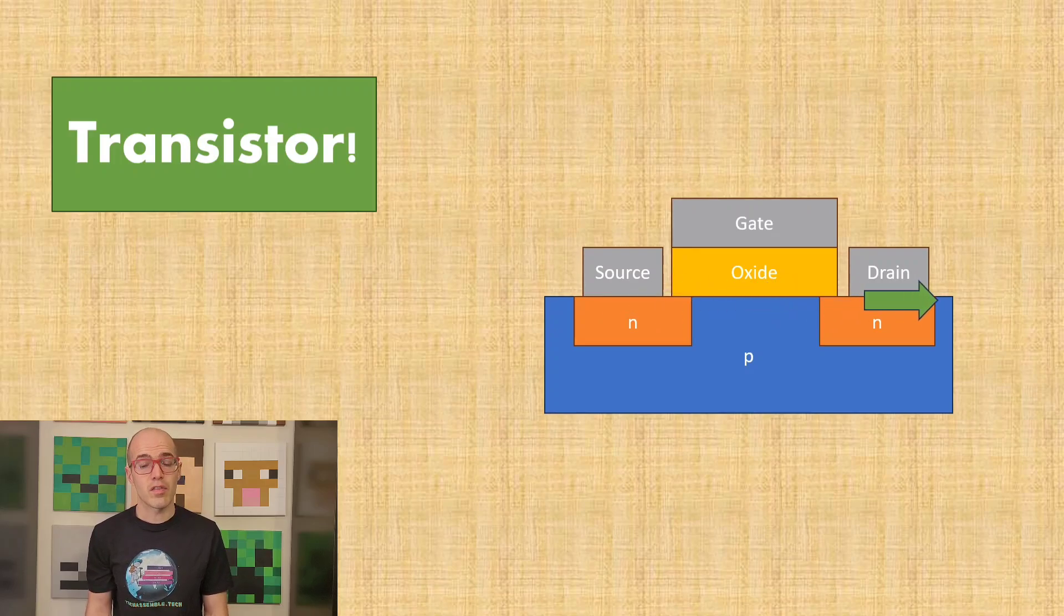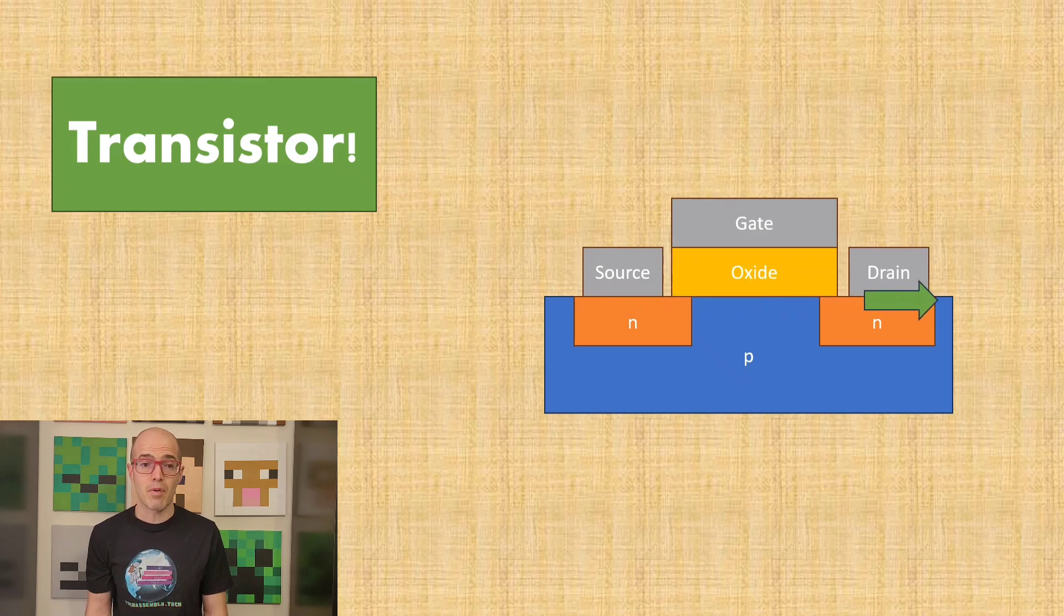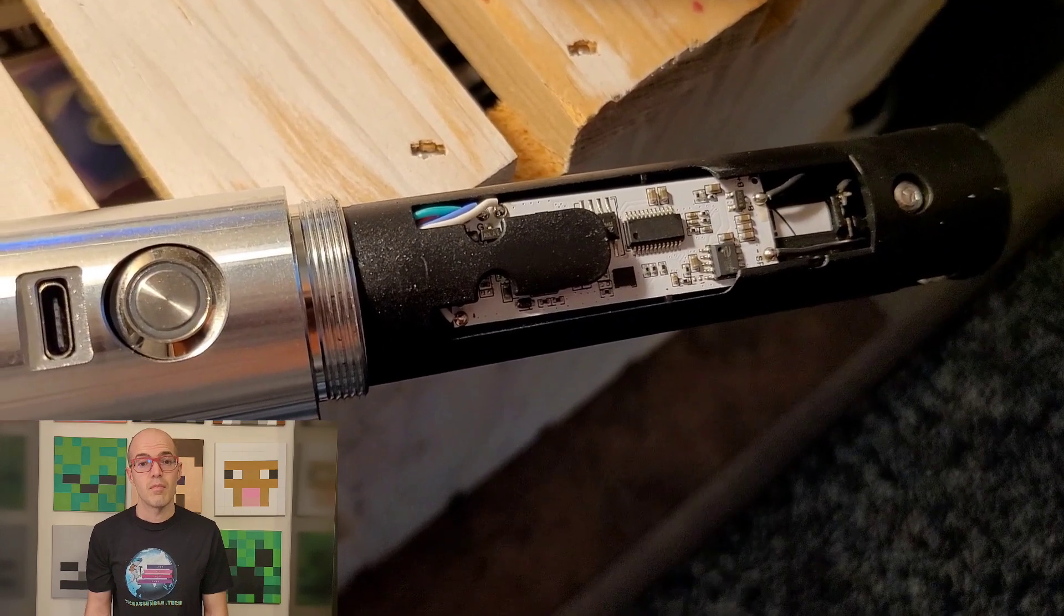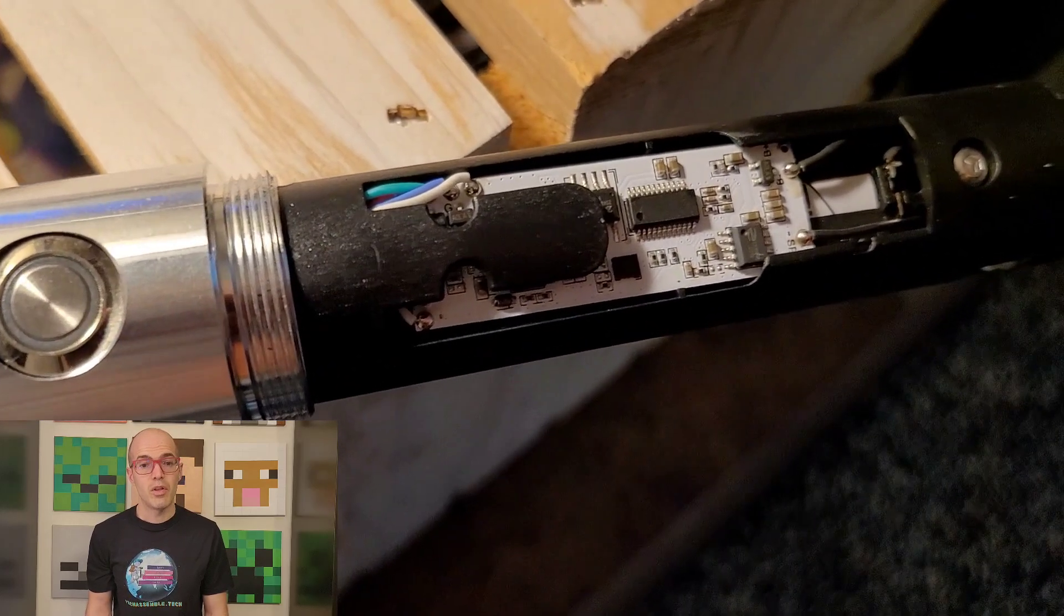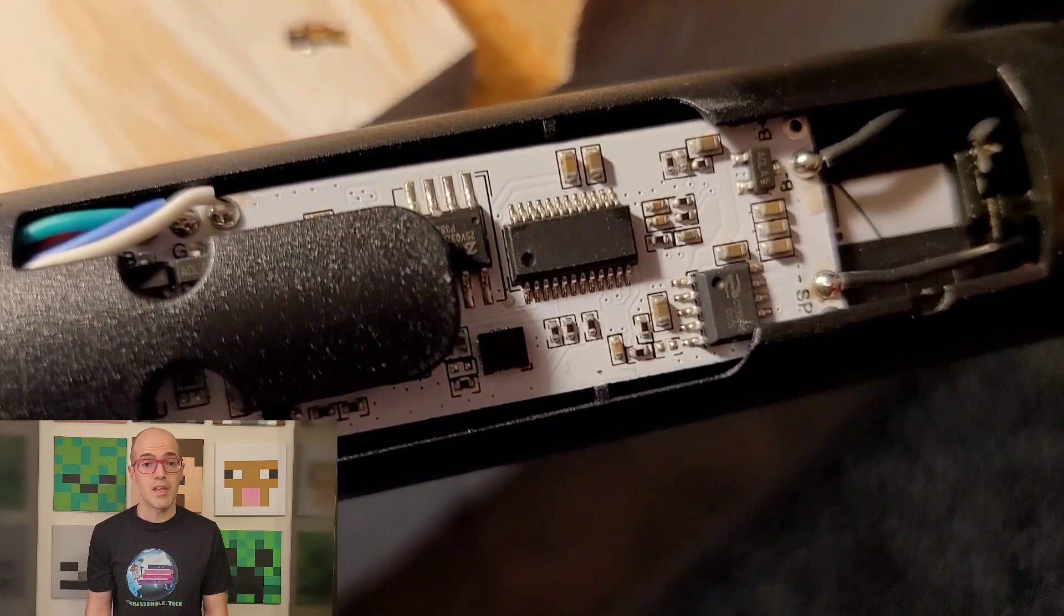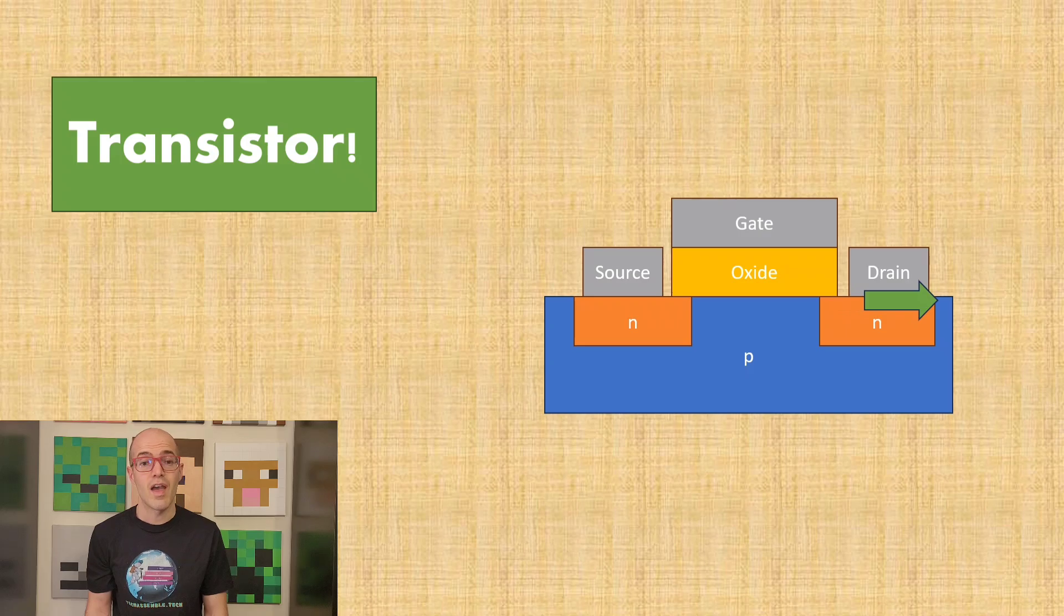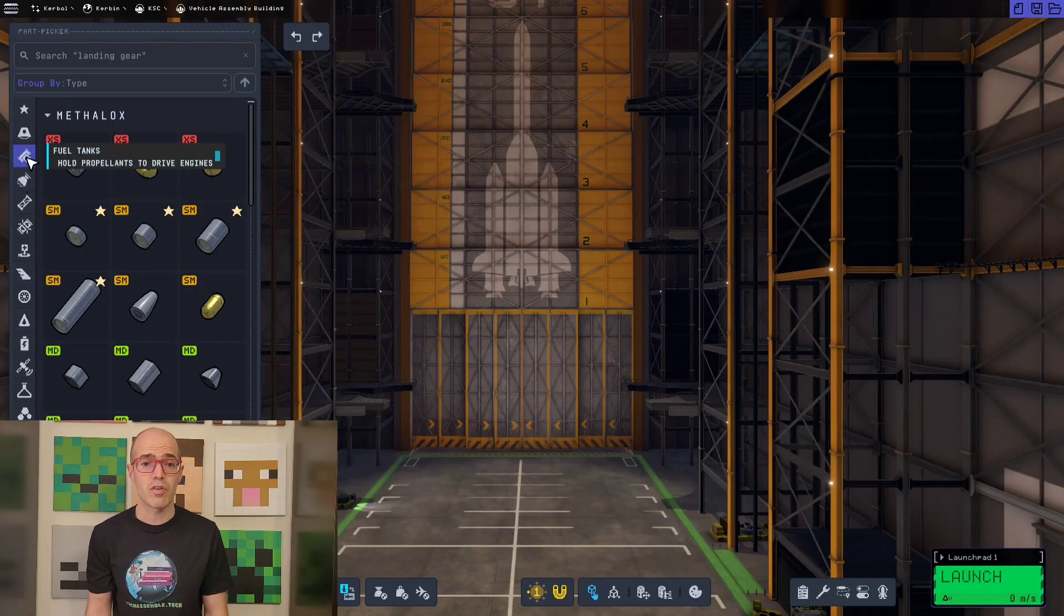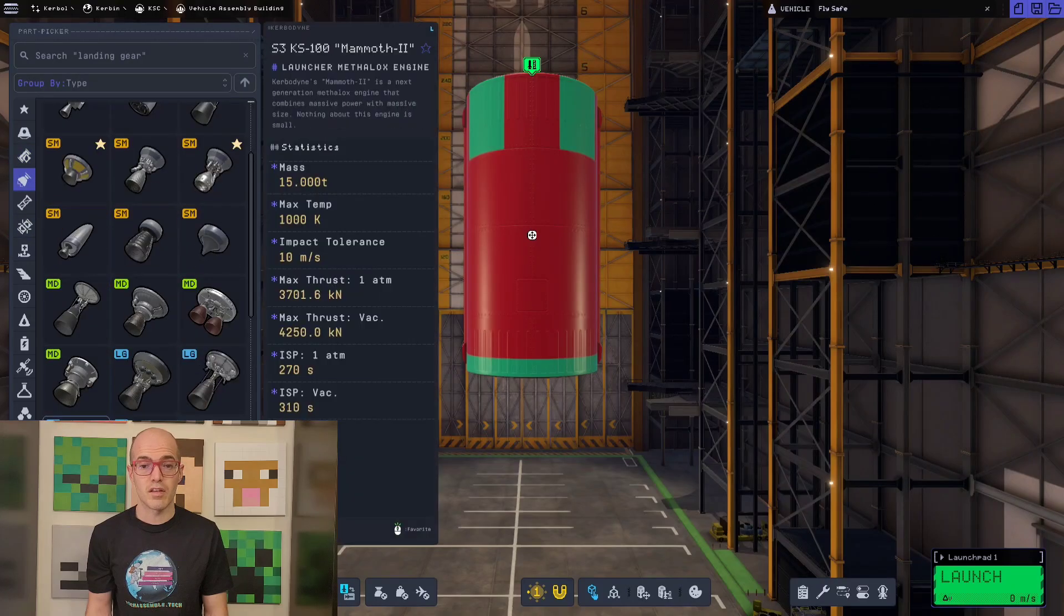In the field of electronics, the semiconductor industry relies on the behavior of electrons to create the integrated circuits that power electronic devices. For instance, in the fabrication of computer chips, engineers manipulate the movement of electrons within silicon crystals to create transistors, the building blocks of digital circuits. By precisely controlling the flow of electrons, semiconductor manufacturers can design microprocessors capable of executing complex computations at lightning speeds. The understanding of electron behavior enables the development of faster, smaller, and more efficient electronic devices, driving technological advancements in computing and communication.